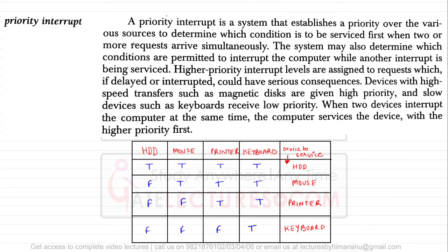Priority interrupts: a system that establishes a priority over various sources to determine which condition is to be served first when two or more requests arise simultaneously. If two or more devices generate interrupts at the same time, the system must decide which device to service first. The system may also determine which conditions are permitted to interrupt the computer while another interrupt is being serviced.